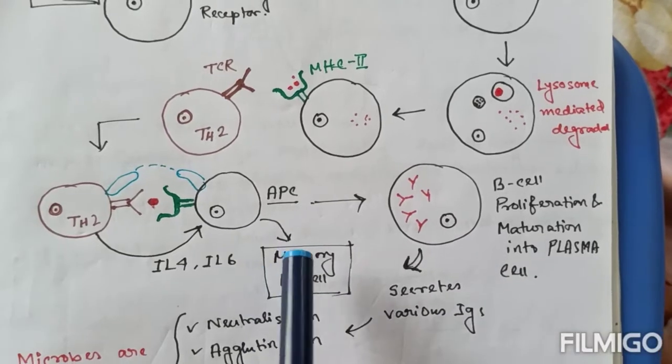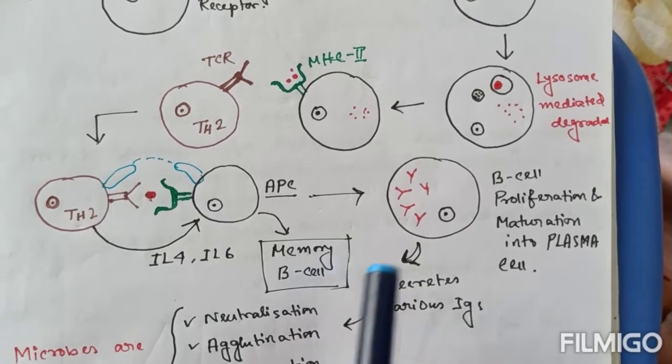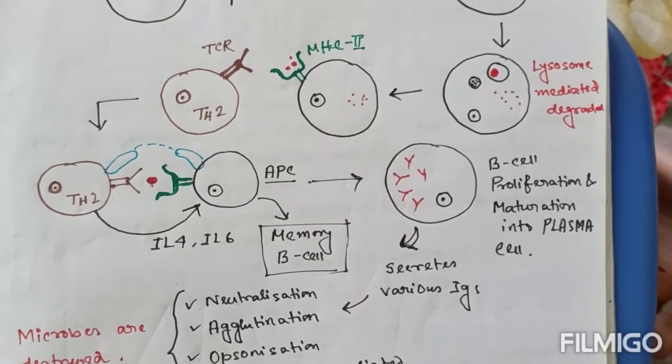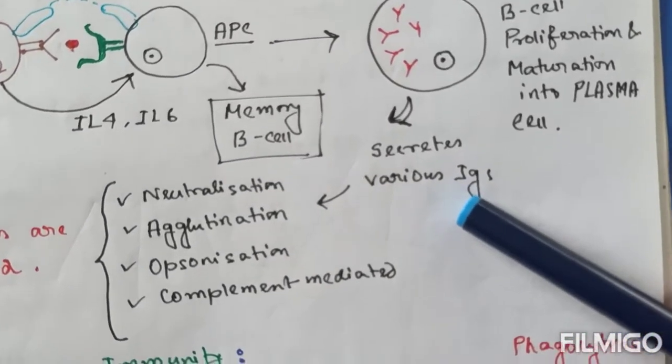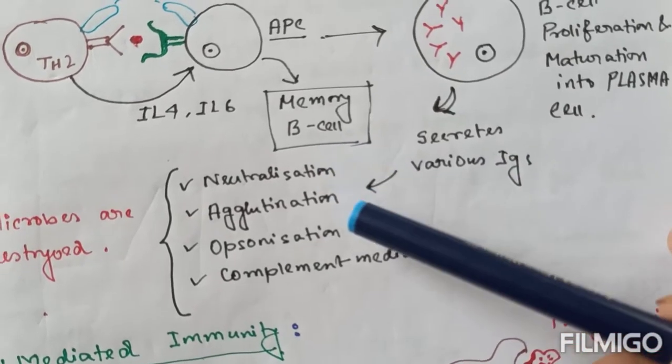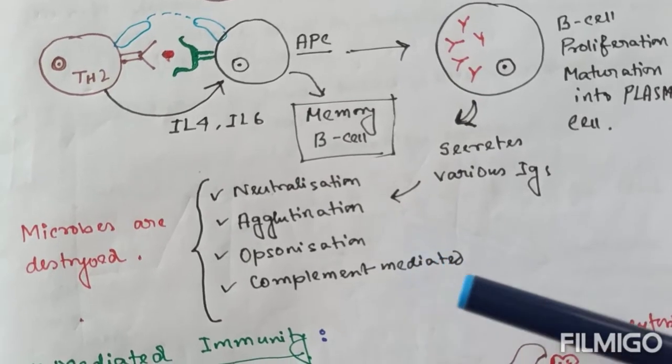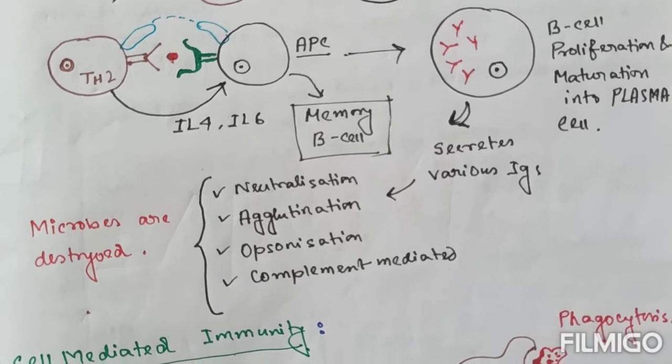And also some B-cells are converted as memory B-cell for future recognition of this same type of antigen. And the antigens then act by various mechanisms like neutralization, agglutination, opsonization, complement-mediated destruction to remove the microbes as soon as possible.